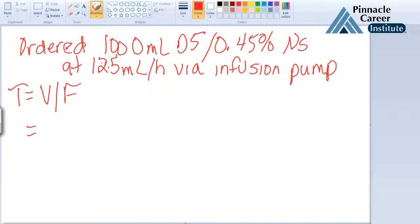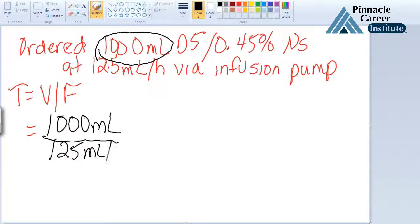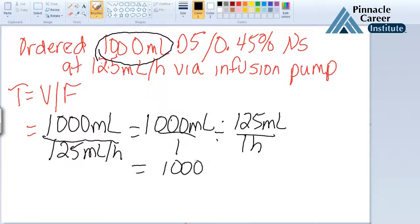So our volume here is 1,000 milliliters divided by our flow, which is 125 milliliters per hour. I'm going to write that a little bit different so it's easier to work with. We'll have 1,000 milliliters over 1 divided by 125 milliliters over 1 hour. And when you divide fractions, you multiply the reciprocal. So we're going to have 1,000 milliliters over 1 times 1 hour over 125 milliliters.